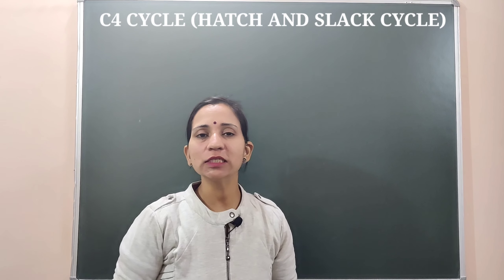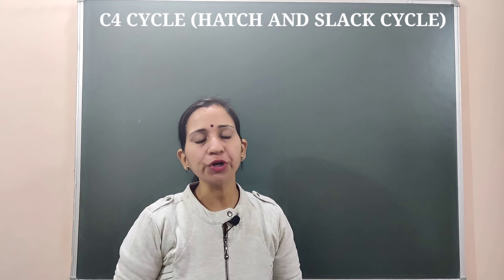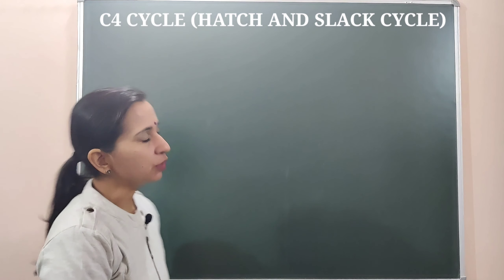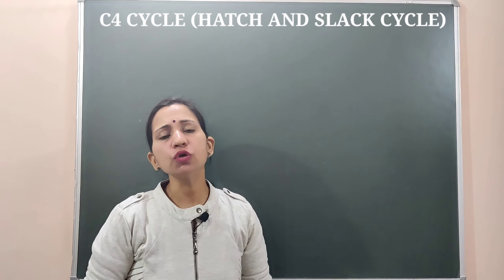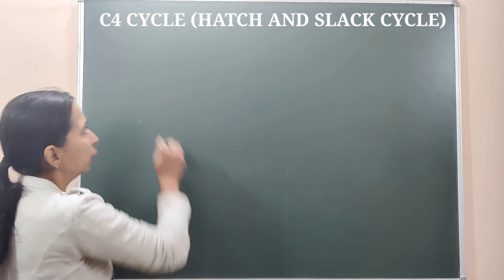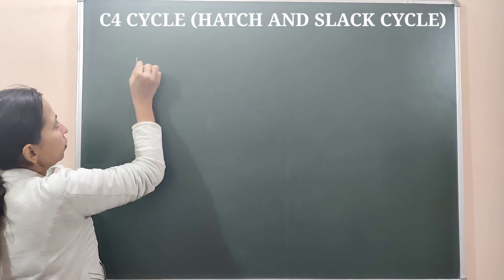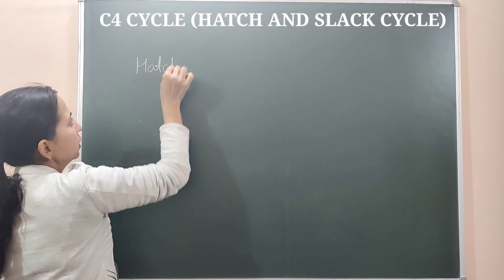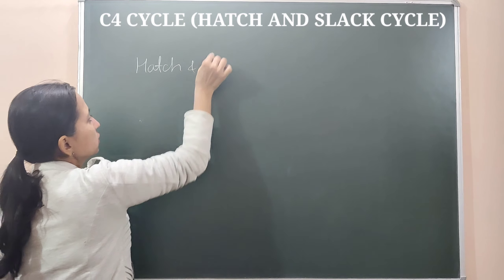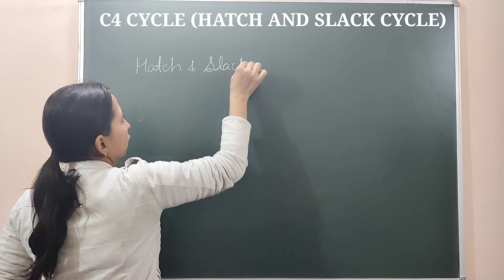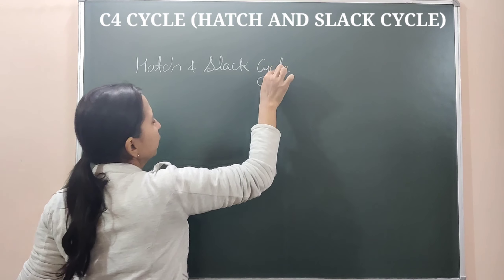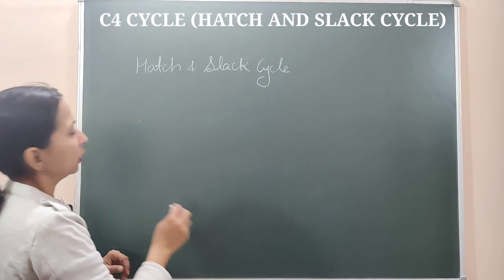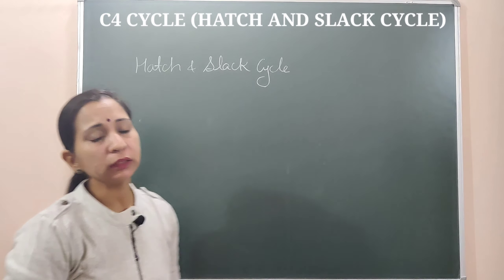Let's discuss the next important process which is the C4 cycle. This C4 cycle is also known as the Hatch and Slack cycle, or Hatch and Slack pathway — both are correct names for this cycle.